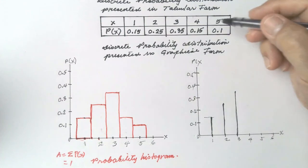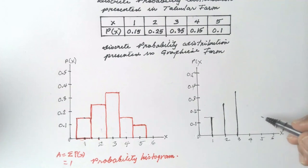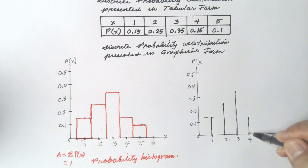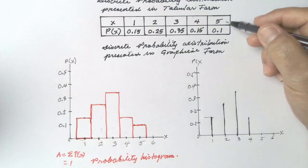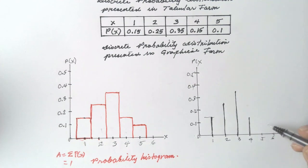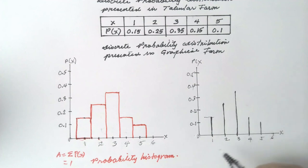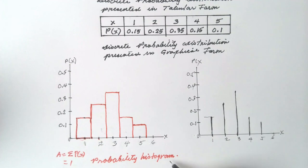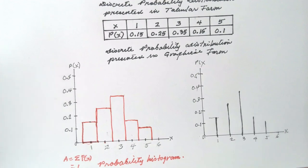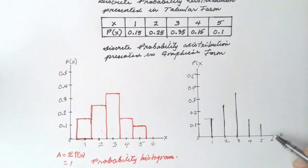When the value is 4, 0.15. And when the value is 5, 0.1. So some books are using probability histograms, some are using segments.